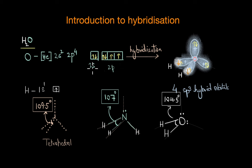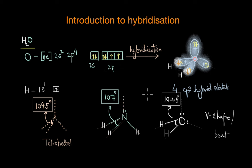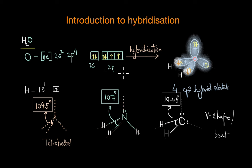To conclude: the 2s and 2p orbitals combine to give 4 sp3 hybrid orbitals, so the electronic geometry in both ammonia and water is tetrahedral. However, the molecular shape is significantly affected by lone pairs — in ammonia the shape is trigonal pyramidal, while in water the shape is V-shaped or bent. Hybridization does a much better job of explaining molecular geometry than simple atomic orbital overlap. In addition, hybridization also explains why some elements form more bonds than expected from their valence electronic configuration — so let's learn about that in our next video.